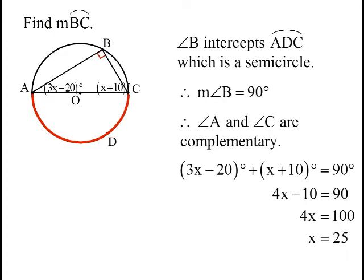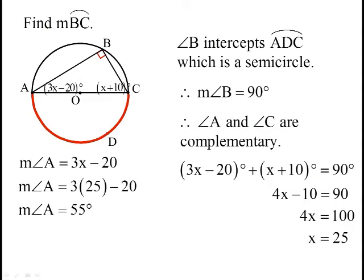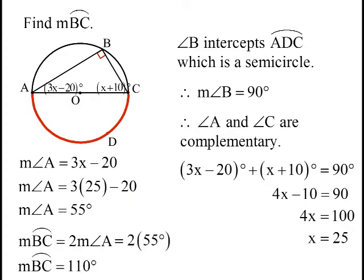So now, to find arc BC, it would be helpful to know what angle A is. So I'm going to substitute 25 in there to figure out what angle A is. Turns out to be 55 degrees. So the arc then is going to be double that, 110 degrees.